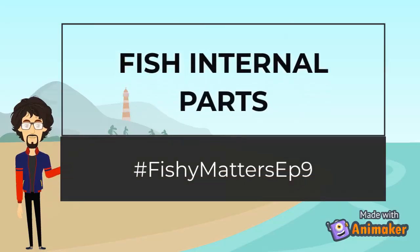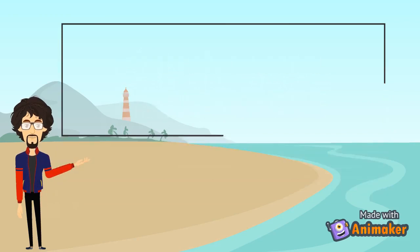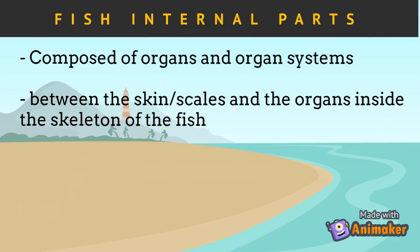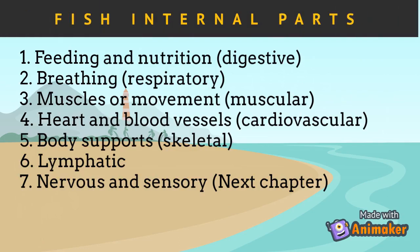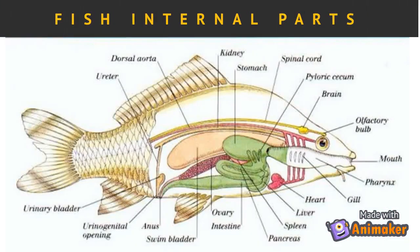Hello there. In today's episode, we will discuss the internal parts or organs of fish. The fish internal parts are composed of organs and organ systems between the skin/scales and the organs inside the skeleton. This includes systems involved in feeding and nutrition (digestive system), breathing (respiratory system), muscles (muscular system), heart and blood vessels (cardiovascular system), body supports (skeletal system), lymphatic system, and the nervous and sensory system. In this chapter, we will only be discussing the digestive, respiratory, muscular, and skeletal systems. The sensory system in fish will be discussed in succeeding chapters.